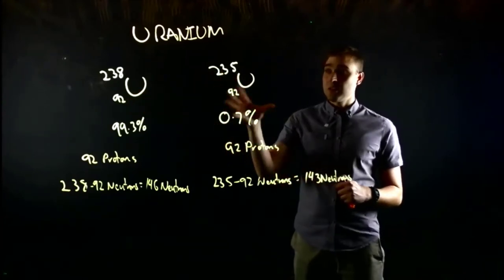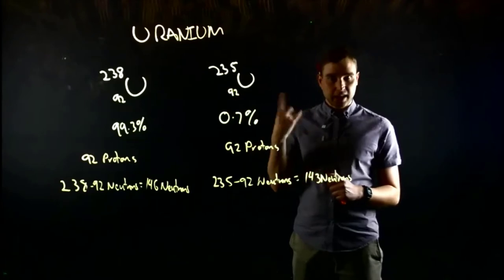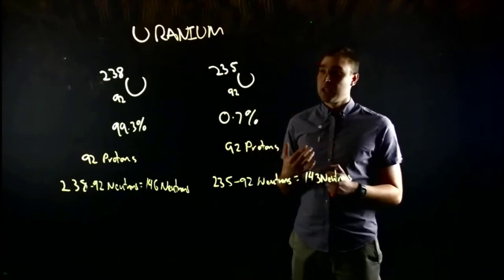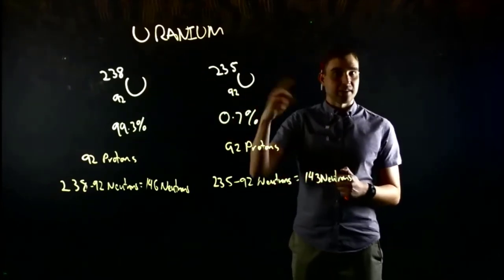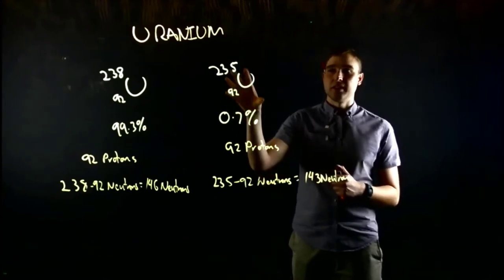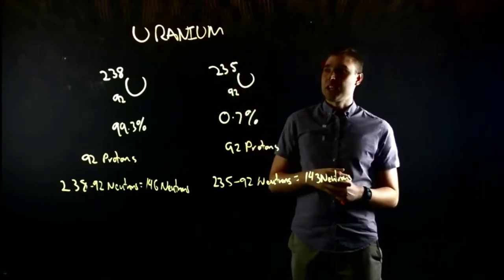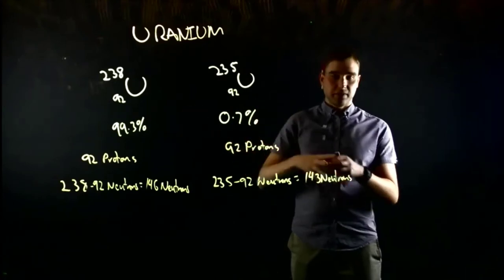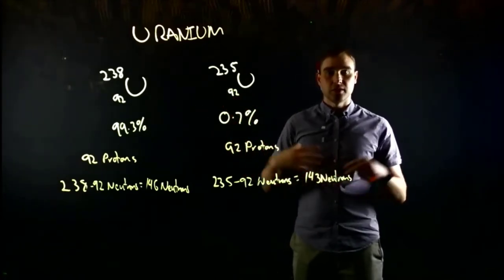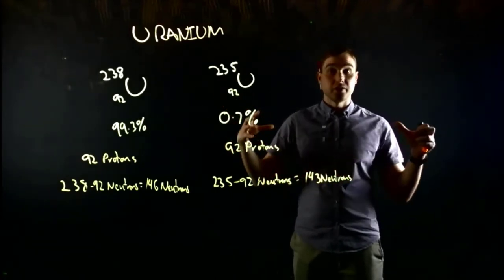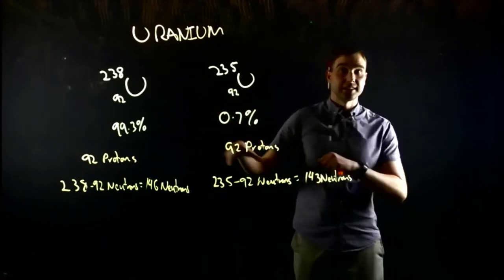So what they do is they turn uranium into a gas, and then they spin that gas around really, really quickly. The heavier gas flies out faster and further than the lighter gas. So the gas that contains the uranium-238, that flies out of these things called centrifuges, goes further from the middle than the uranium-235 gas does.